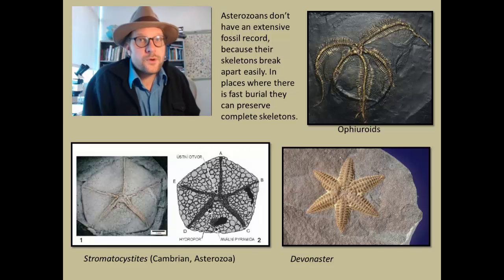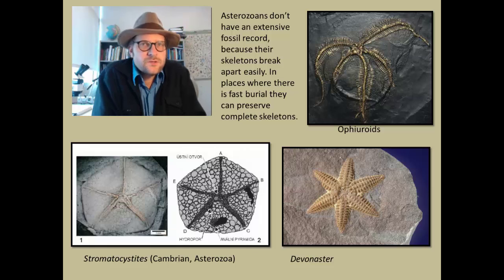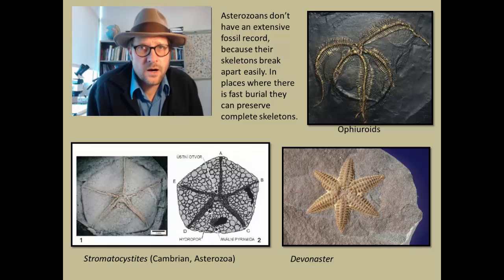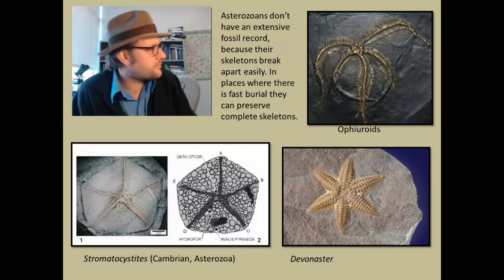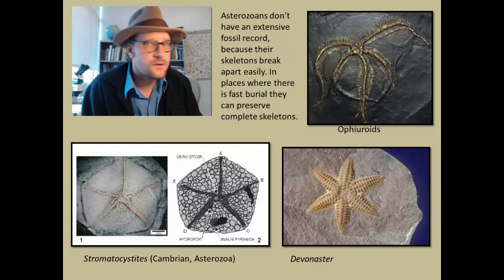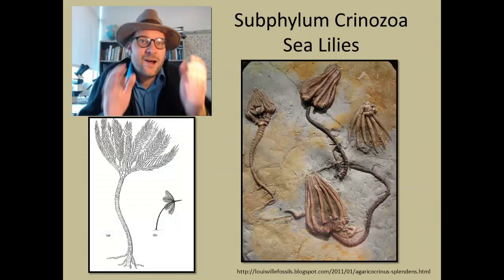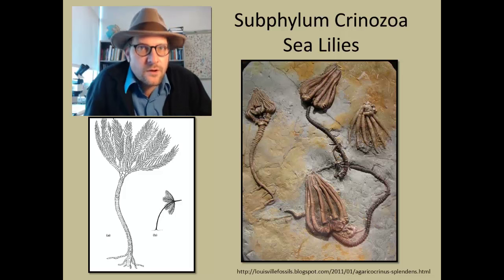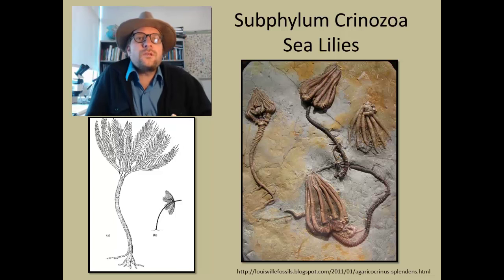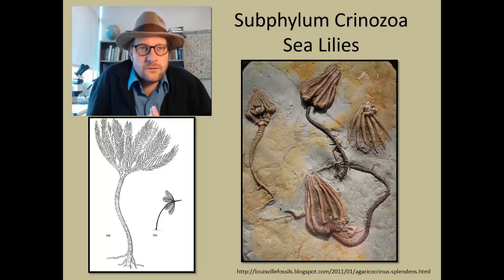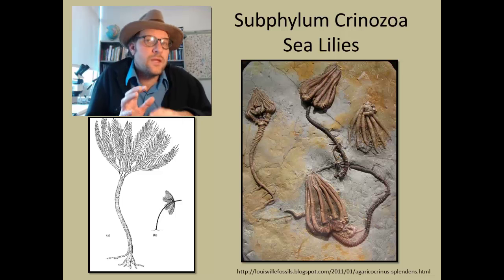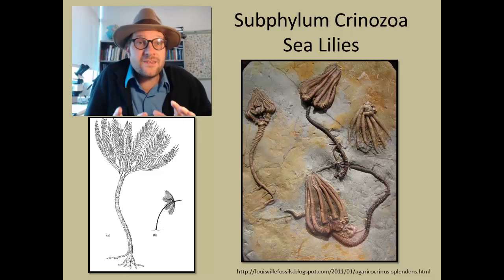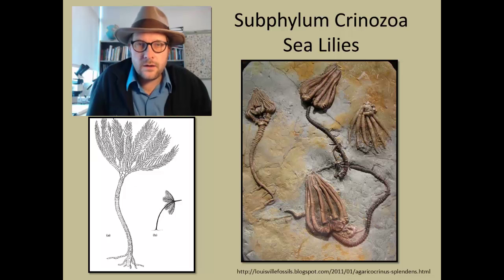The Ophiuroids are the brittle stars, and they have much more slender, flexible arms, and they first appear in the fossil record during the Ordovician and are still living today. Now we come to the great fossilized group, the Crinozoa, or Crinoids. This group was once called the Pelmatozoa, or stalked echinoderms, since rather than being mobile, they remain sessile on the ocean floor. Today they include the sea lilies, found in many marine environments.